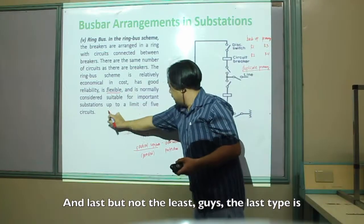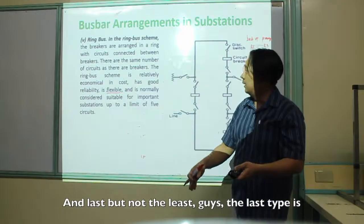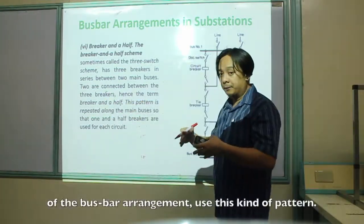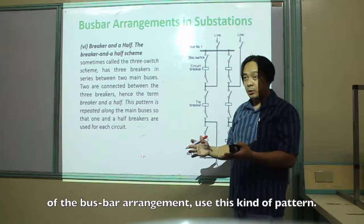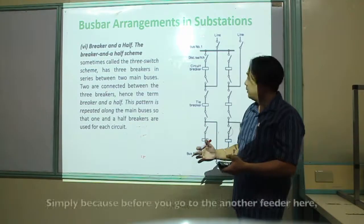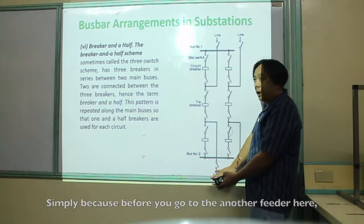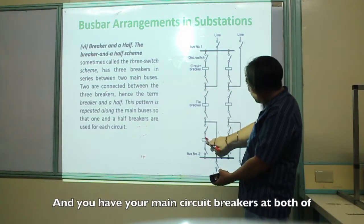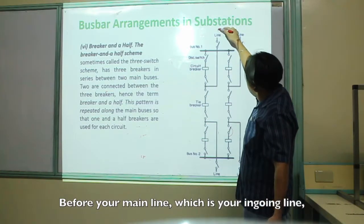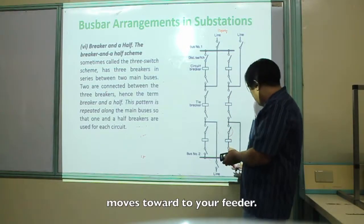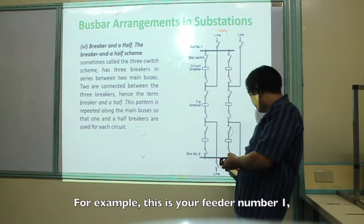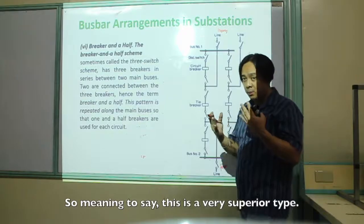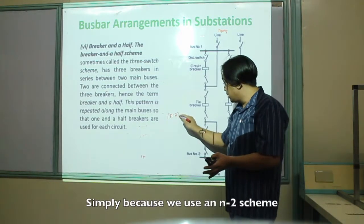Last but not least is the breaker-and-a-half arrangement. This is very familiar because the majority of bus bar arrangements use this pattern. It is called breaker-and-a-half because before moving to another feeder, it is separated by one and a half breakers. You have a tie breaker and main circuit breakers at both bus bars. Before the incoming line moves toward the feeder, it passes through one and a half breakers. This is a very superior type simply because it uses an N-2 scheme.